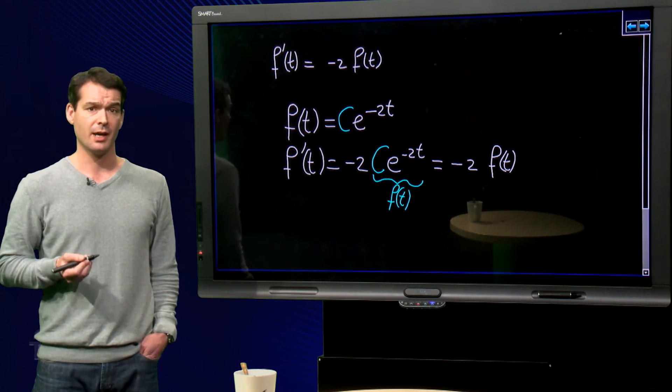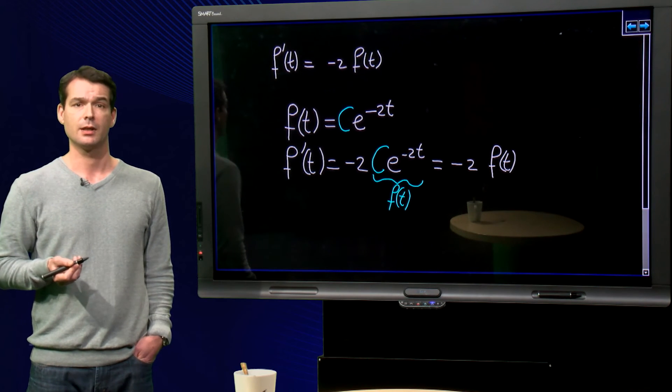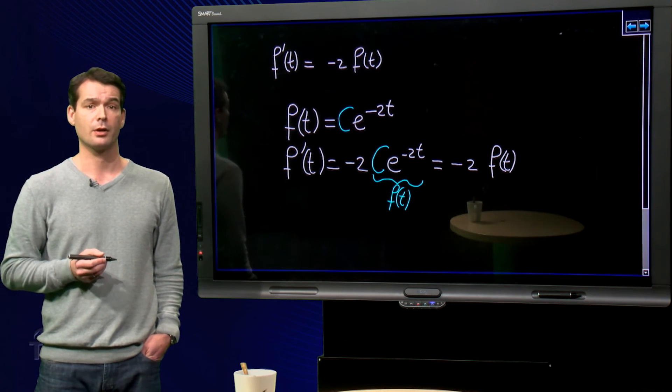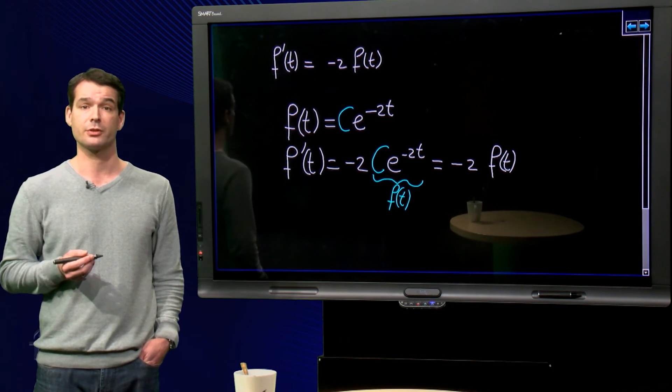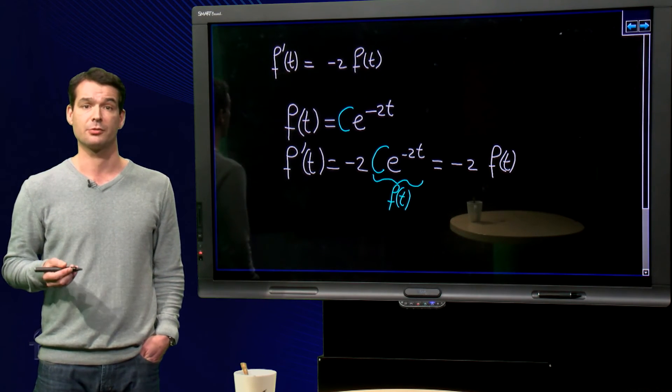We don't expect to find infinitely many different functions that all describe the temperature of my coffee. So what is the value of c in this case? Well, our coffee machine produces coffee with a temperature of 80 degrees Celsius.